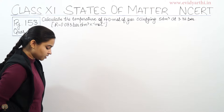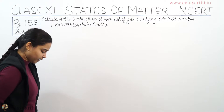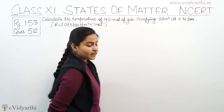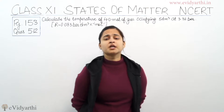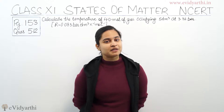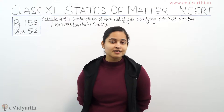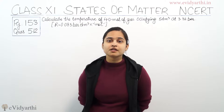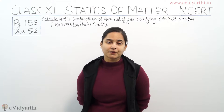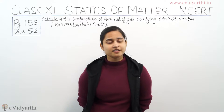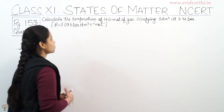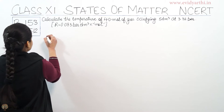So we need to calculate our temperature. For calculating the temperature we can use the equation PV = nRT. All the values are given to us and we need to calculate our temperature. It's so simple, so let's do the solution over the board.